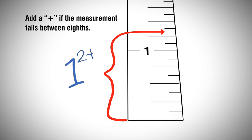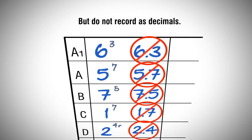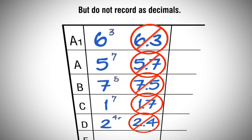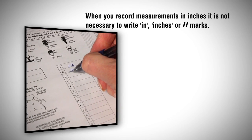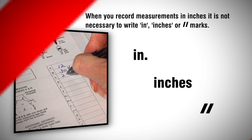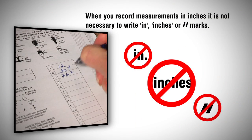Add a plus if the measurement falls between eighths, but do not record as decimals. When you record measurements in inches, it is not necessary to write 'in' or marks.